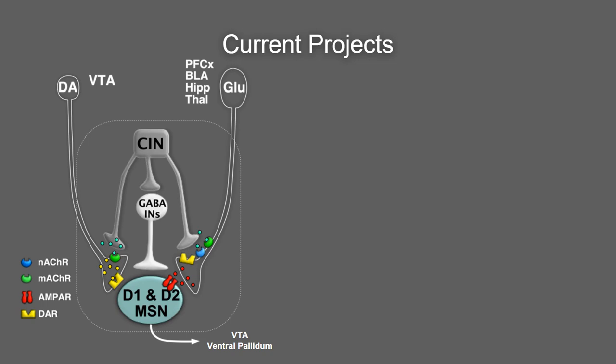Here is a simplified cartoon of the microcircuitry of the nucleus accumbens, showing the main players: the medium spiny neurons at the bottom in green. The medium spiny neurons are the only output of the nucleus accumbens, so whatever changes their excitability will likely have an impact downstream on behavior. These neurons typically come in two flavors — those expressing dopamine D1 and those expressing dopamine D2 receptors. In addition, we have GABA interneurons and the cholinergic interneuron on top in gray, plus dopaminergic inputs and glutamatergic afferents from the cortex, BLA, hippocampus, and thalamus.